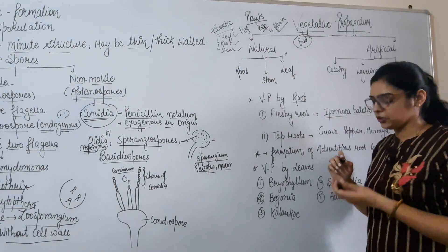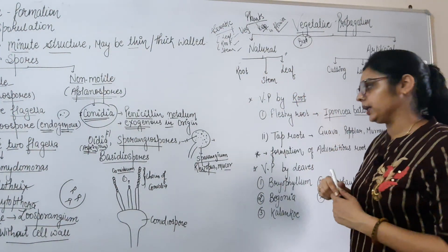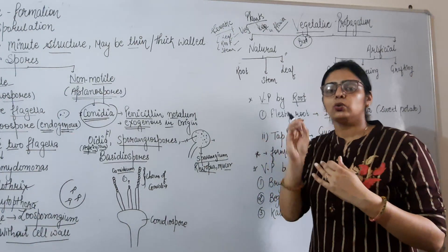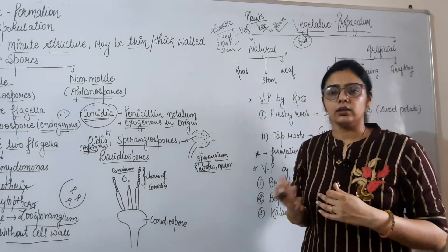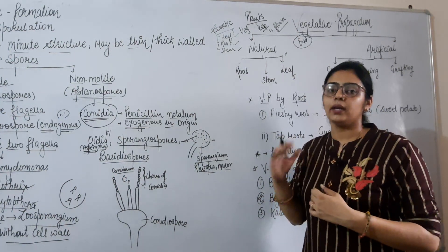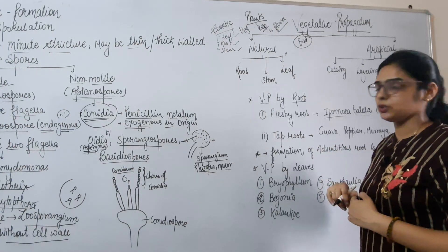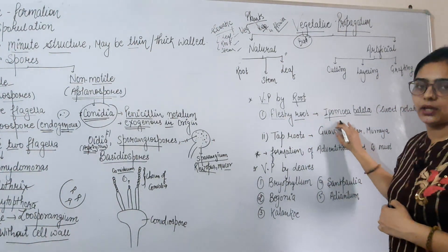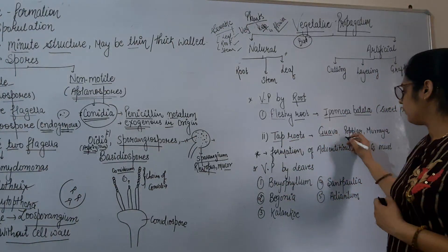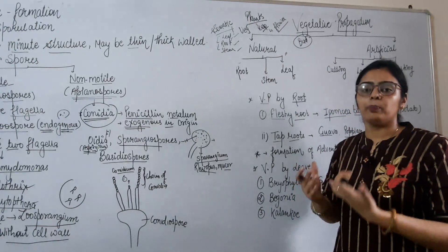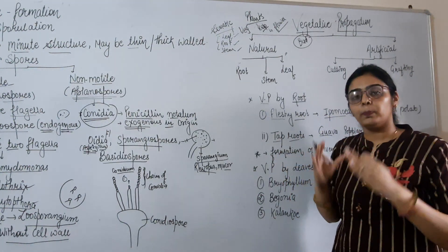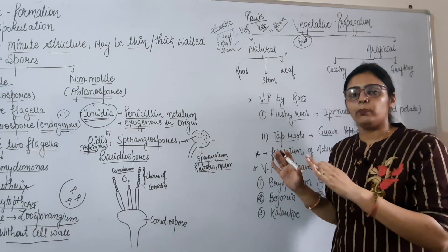Natural vegetative propagation occurs through root, stem, and leaf. Today we will study propagation by root and by leaf; propagation by stem will be covered along with morphology in the next video. For vegetative propagation by roots, some fleshy roots like sweet potato also form buds and produce new plants. Tap roots like guava, poplar, and murraya also produce new plants through bud formation. Bud formation is necessary — without it, new plant formation from roots cannot occur.